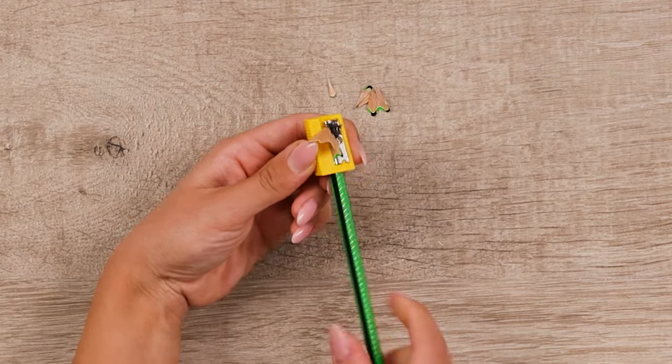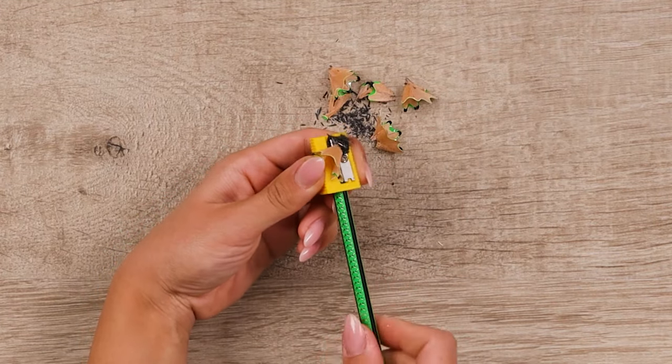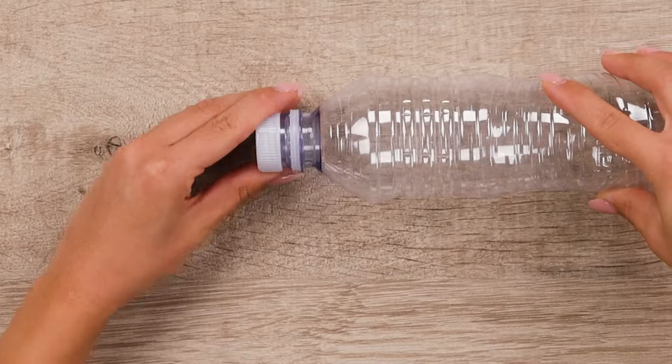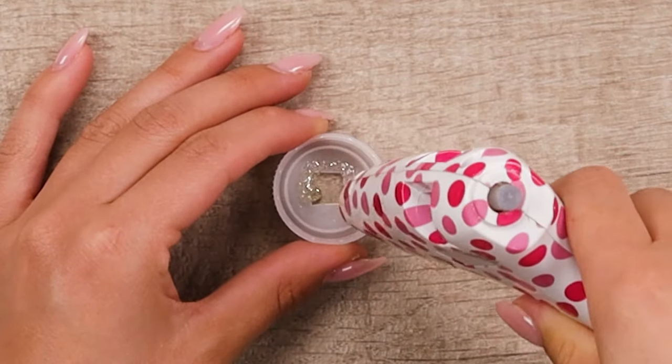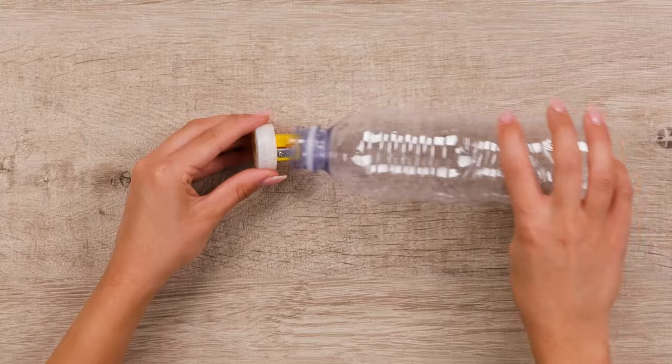Next up, let's turn an old plastic bottle into a clever pencil sharpener container! By attaching your sharpener to the bottle cap, you can keep all the shavings neatly inside the bottle!